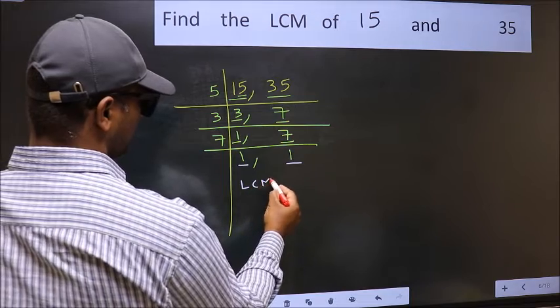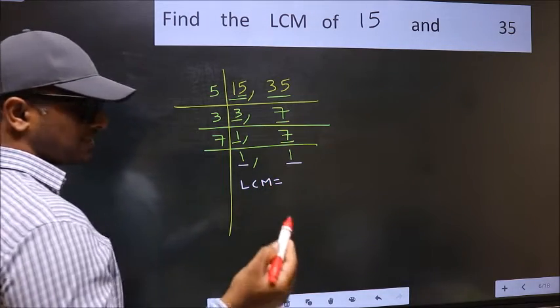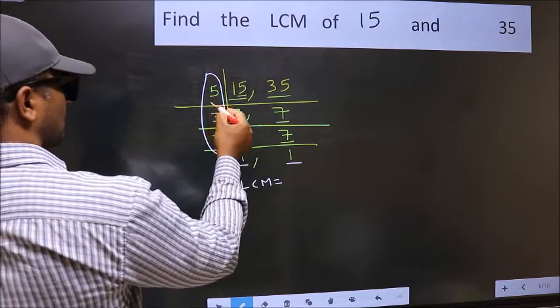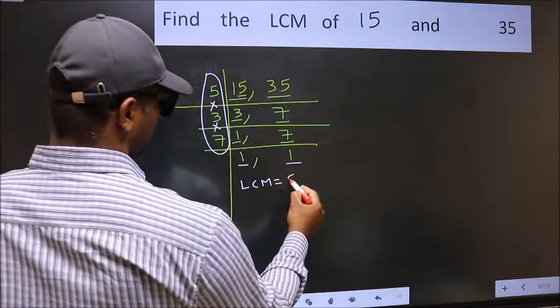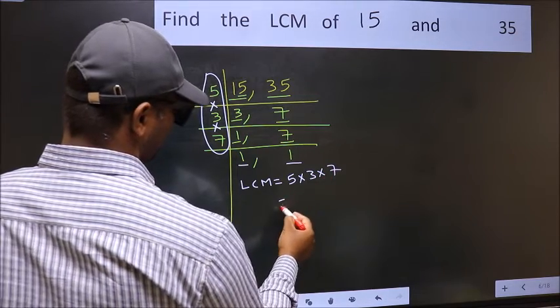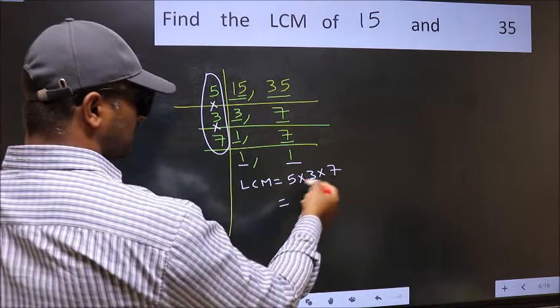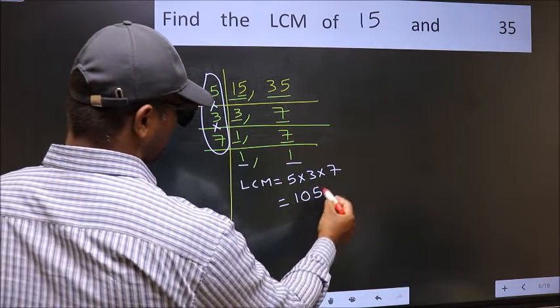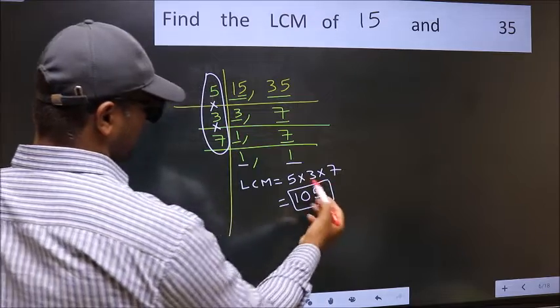So our LCM is the product of these numbers. That is 5 into 3 into 7. When we multiply these numbers, we get 105 as our LCM.